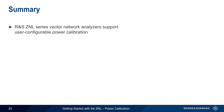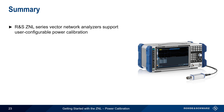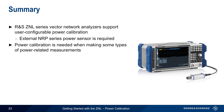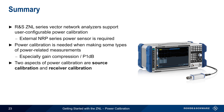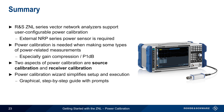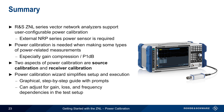Let's end with a brief summary. Rohde & Schwarz ZNL Series Vector Network Analyzers support user-configurable power calibration, typically performed using an attached NRP Series power sensor. Power calibration is needed when making some types of power-related measurements, in particular when measuring gain compression or P1dB. The ZNL supports both aspects of power calibration: source calibration and receiver calibration. The ZNL's Power Calibration Wizard makes it easy to set up, configure, and run calibration. A graphical step-by-step guide prompts the user through the process, and power calibration configuration can also be adjusted to account for gain, loss, or frequency-dependent behavior in the test setup. This concludes our presentation, Getting Started with ZNL Power Calibration. For more information about power calibration, power-related measurements, or vector network analyzers from Rohde & Schwarz, please see the links in the video description.